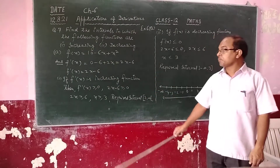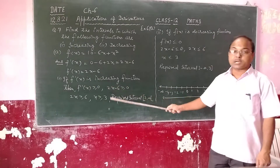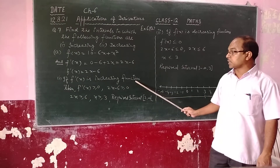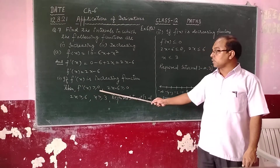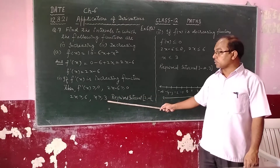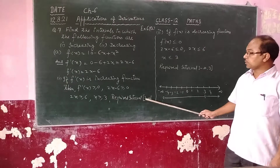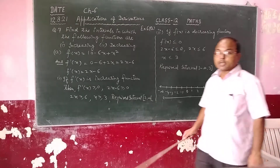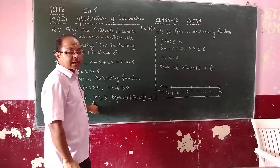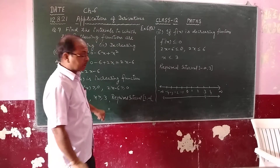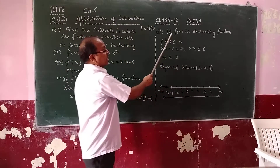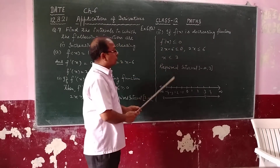First part: for the increasing function, the interval is where f'(x) is greater than or equal to 0. So f'(x) ≥ 0 means 2x - 6 ≥ 0, which gives x ≥ 3. So the required interval in which the function is increasing is x ≥ 3.